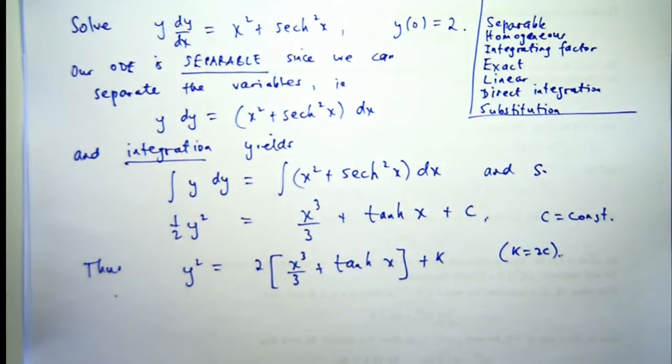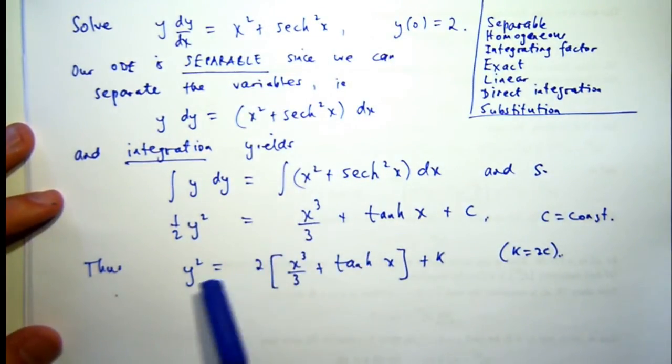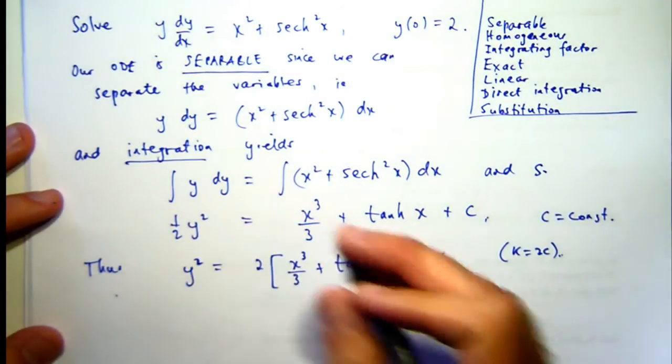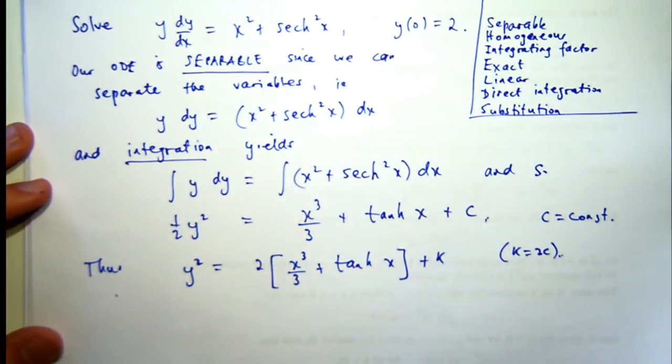So now what? We've got a general solution to our differential equation in implicit form. What we'd like to do is determine the value of K by this initial condition.